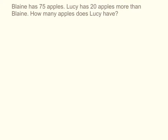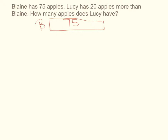Here is our first problem. Blaine has 75 apples. Lucy has 20 apples more than Blaine. How many apples does Lucy have? This story tells me a lot of information. I'm going to use a bar model to draw out that information. I already know how many apples Blaine has — Blaine has 75 apples. So this whole box is 75. These are Blaine's apples, marked with a B. My unknown must be Lucy's total.